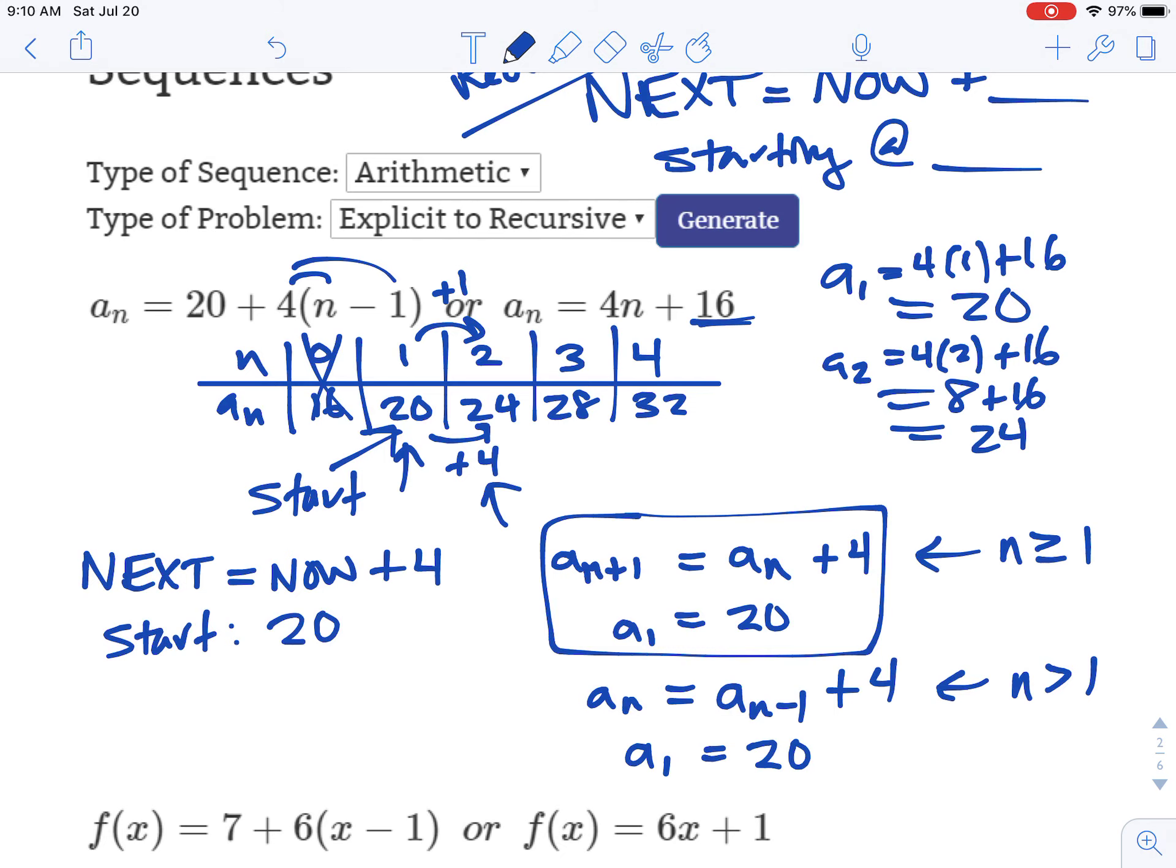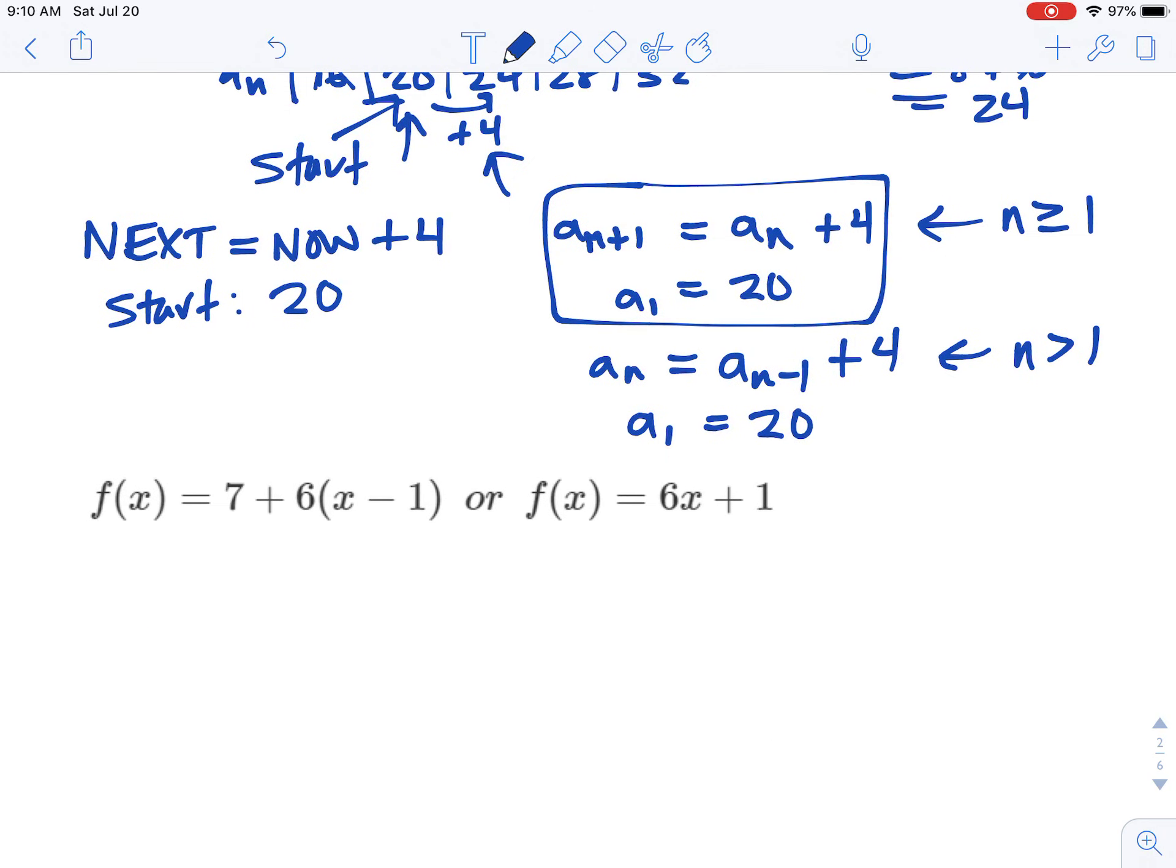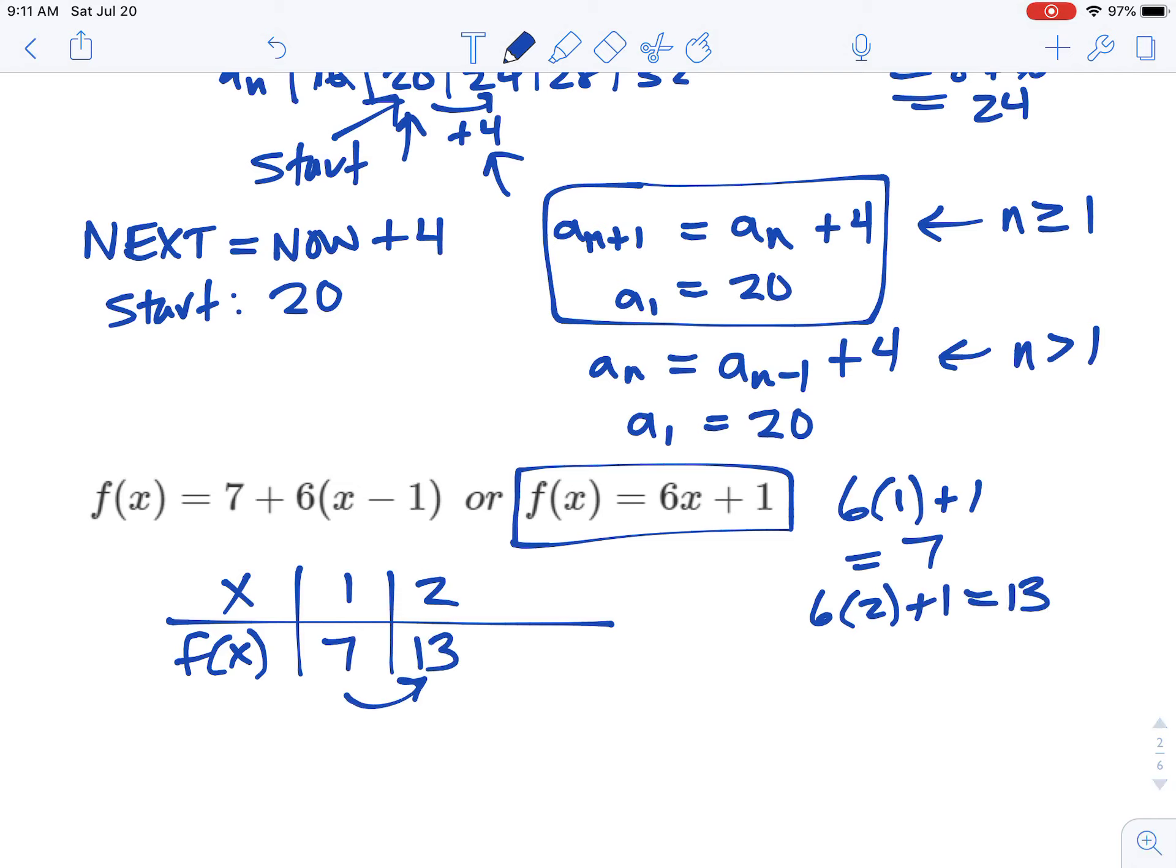For down below, it's very similar. I just got f of x notation instead. Again, we're going to stick with this one that we're used to. Make a little table out of this. So x and f of x here. So when x is 1, our first term, this would be 6 times 1 plus 1, which is 7. When x is 2, it would be 6 times 2 plus 1, which is 13.